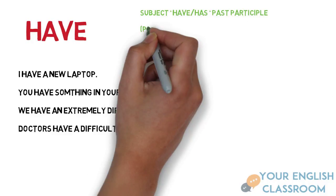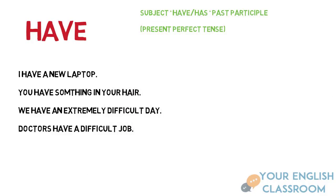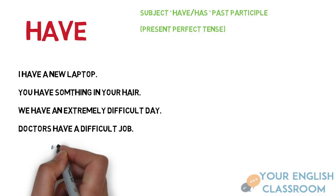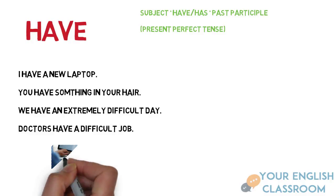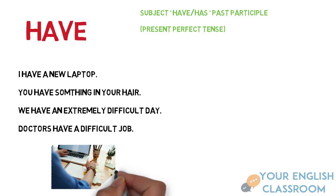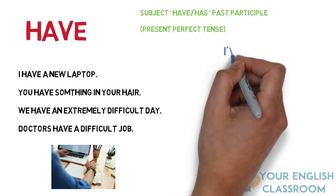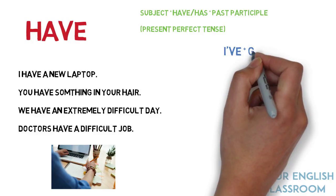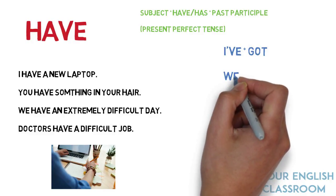Have is also used with the present perfect tense. Get your pens and notepads out and write down this formula: subject plus have/has plus past participle. Past participle is simply the past form of the verb which is used specifically for the present perfect.